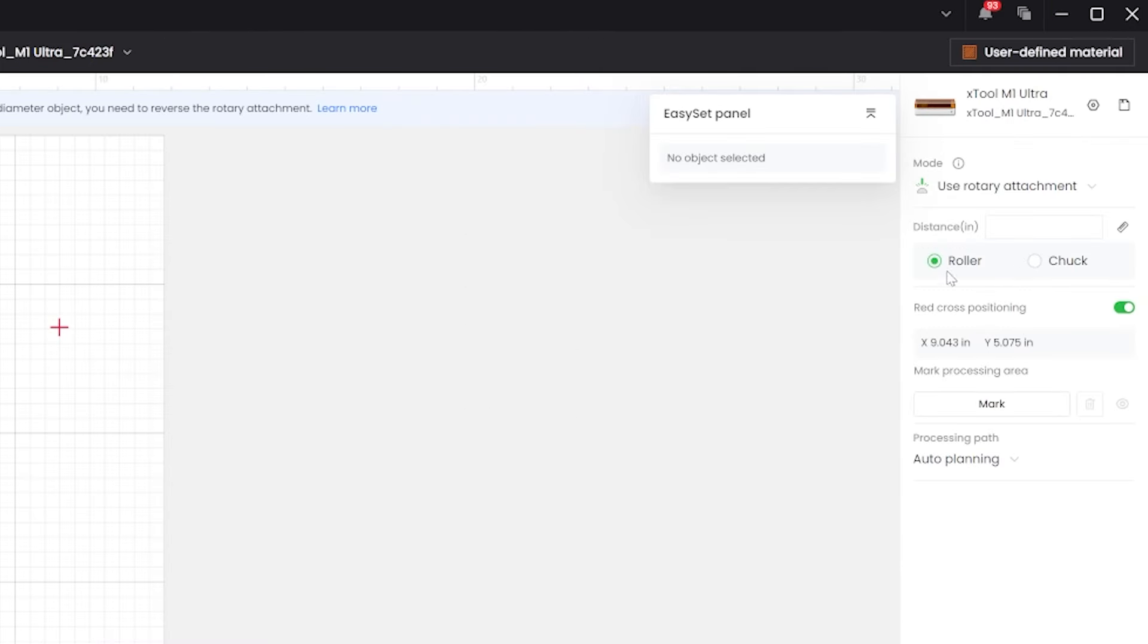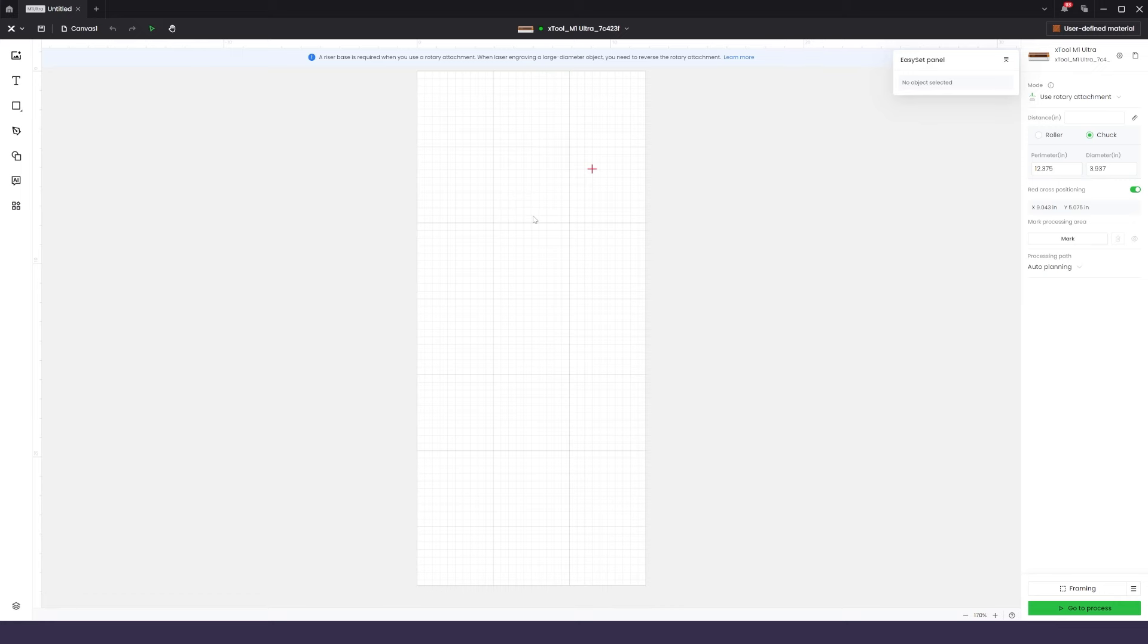You'll also see two options for the rotary tool, Roller and Chuck. We aren't using the Roller for this particular tumbler, but if you were, you wouldn't need to enter any more information. It just magically works as is. However, since we're using the Chuck, we need to provide either the perimeter or the diameter measurement. I measured 12 3/8 inches for the perimeter of the widest part of the tumbler, so I'm going to put 12.375 into the perimeter field. The diameter value will be automatically calculated from this data entry, so you don't need to edit it.